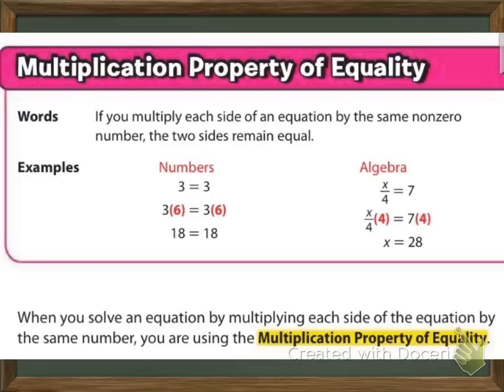Multiplication property of equality. In words, if you multiply each side of an equation by the same non-zero number, the two sides will remain equal. So if you have 3 equals 3, which obviously 3 equals 3, and we say, okay, well, I'm going to multiply both sides by 6. As long as you do it to both sides, we're keeping that balance, and we're going to have 18 equals 18, which is still in balance.